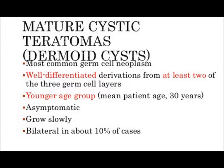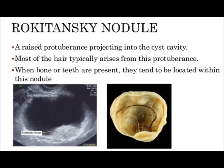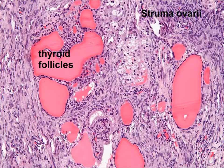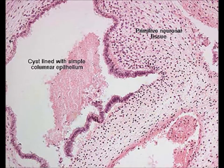They are presented in younger age group, asymptomatic, grow slowly, and bilateral in about 10% of cases. In a young female there may be an incidental finding of a cystic mass. Microscopically you can appreciate the presence of cartilage and skin, and if they are highly specialized, thyroid tissues may be present and the patient may present with thyroid toxicosis.